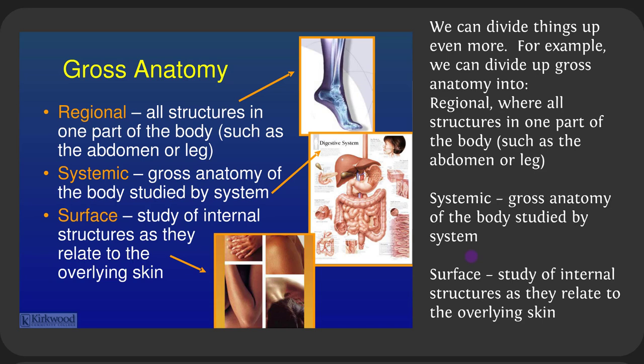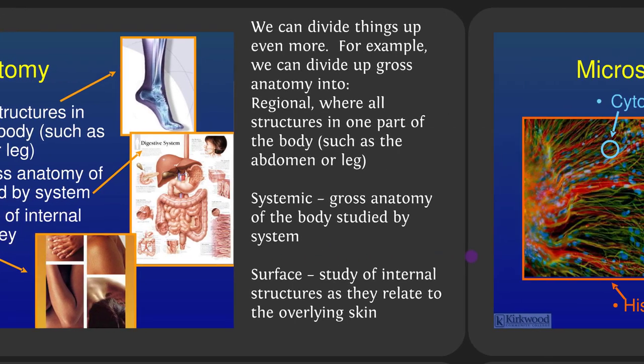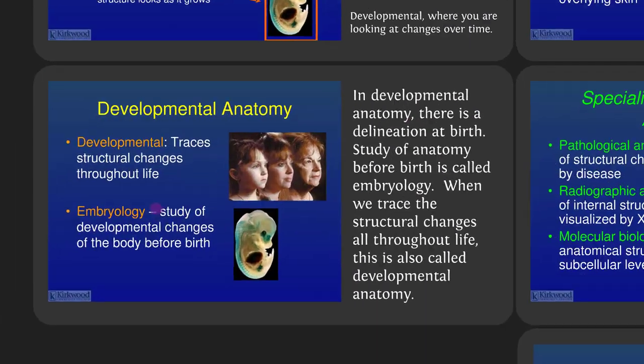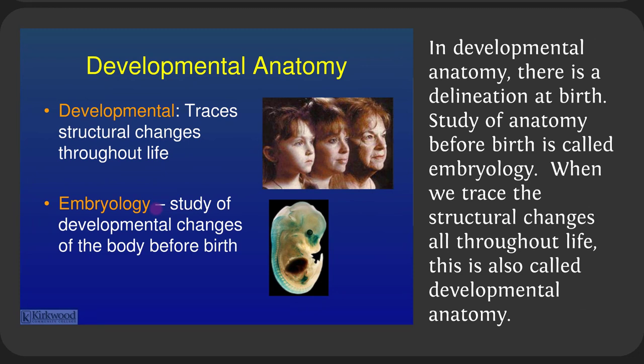A podiatrist would be a regional anatomist who studies the feet. A gastroenterologist studies the digestive system — that's systemic anatomy. Microscopic anatomy divides into cytology, the study of cells, and histology, the study of tissues — groups of cells working together to perform a unified function. Cytology would be the study of a neuron; histology would be the study of how different neurons and other cell types work together to help you think. In developmental anatomy, study before birth is called embryology; tracing structural changes throughout life is developmental anatomy.